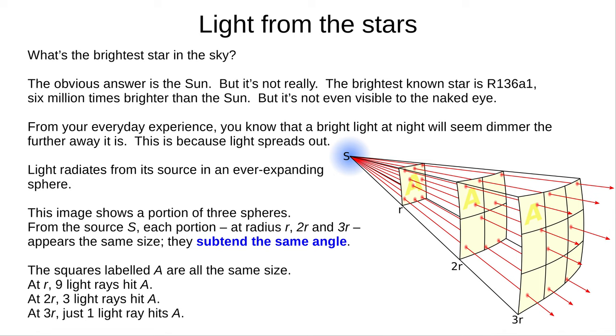You know that a bright light at night, such as a car's headlight, seems dimmer the further away it is. This is because light spreads out. It radiates from its source in an ever-expanding sphere. This diagram shows a portion of three spheres and a light source S. If you are at S looking out, each portion, at radius R, 2R, and 3R, would appear the same size in your vision. We say they subtend the same angle. There are 14 total squares shown here, all the same size, and nine light rays are shown coming from S. If we look at the top left squares labelled A, at distance R, all nine rays hit A. At distance 2R, three rays hit A, and at 3R, just one ray hits A. So the further you are from the source, the less light hits a certain area, and the dimmer the source appears.